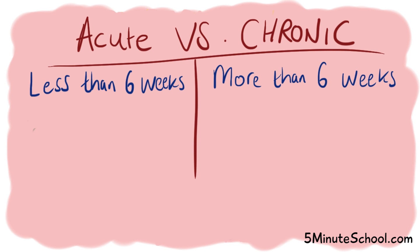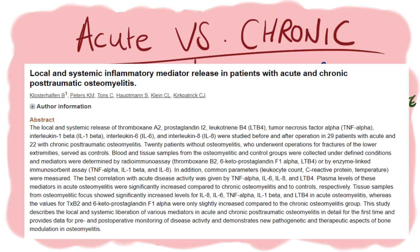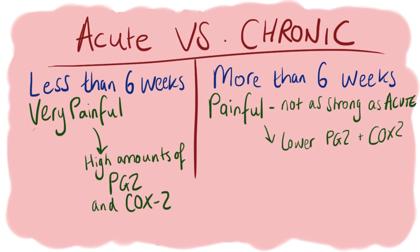A person with acute osteomyelitis is going to be in more pain because there are greater amounts of prostaglandins and cyclooxygenase-2 present, which cause more pain in the bone. Chronic osteomyelitis is also painful but not as intense because there are fewer inflammatory mediators, prostaglandins, and cyclooxygenase-2.